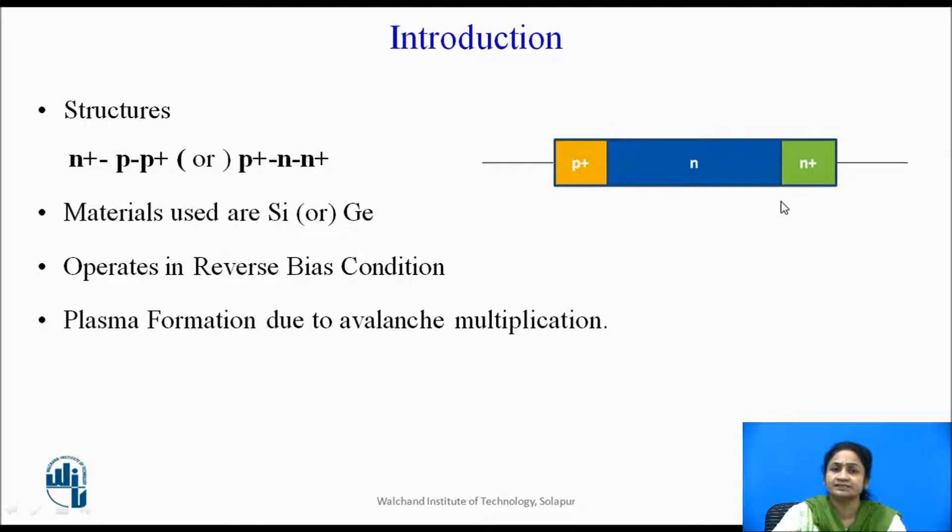Here, this figure shows the structure of P+ and N N+. The size of the P+ varies from 2.5 micrometer to 7.5 micrometer, while N, which is called as a depletion region,